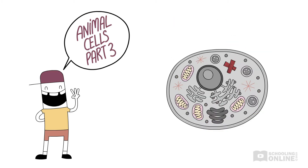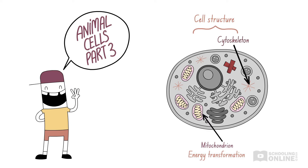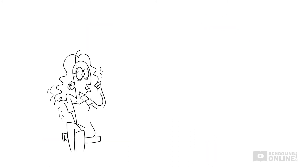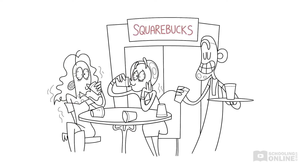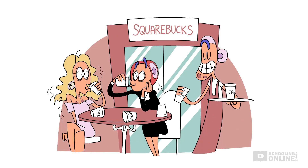This lesson will focus on animal cell components responsible for energy transformations and structure. These include the mitochondria, the cytoskeleton and the centrosome. How do animal cells get the energy that they need to function? They can't exactly drink coffee every morning. Instead, cells use glucose, a type of sugar, to produce energy.